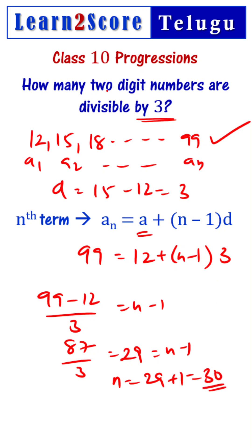So there will be 30 two-digit numbers that are divisible by 3, understood?